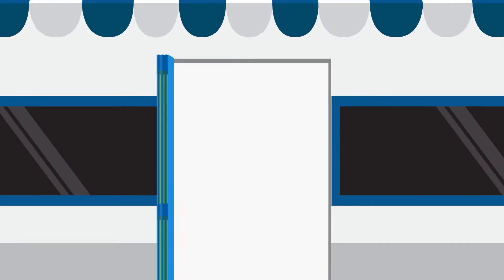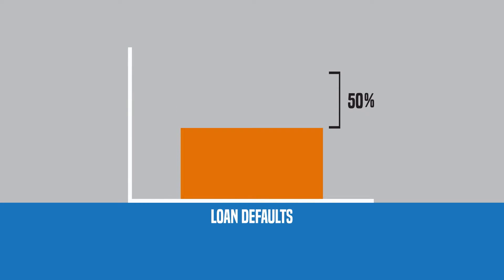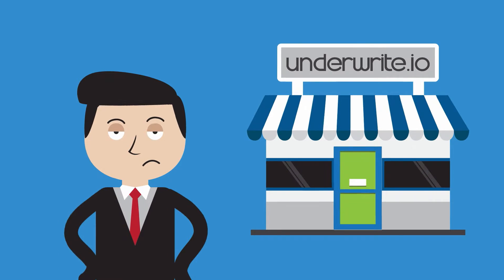But at Underwrite.io, we're introducing a new approach to credit decisioning that reduces defaults by 25 to 50%. Okay, we know that may sound too good to be true, but listen.